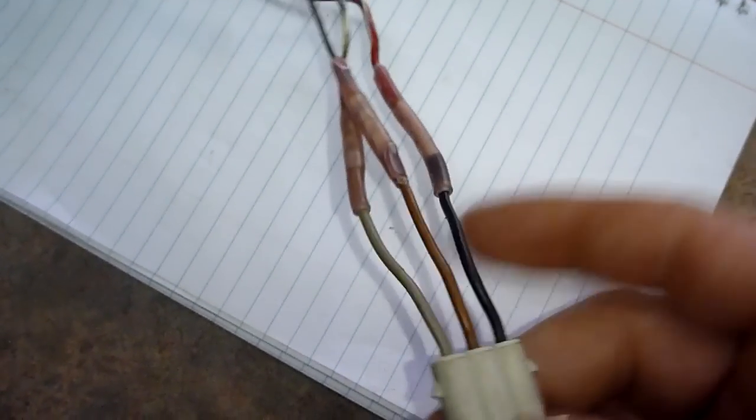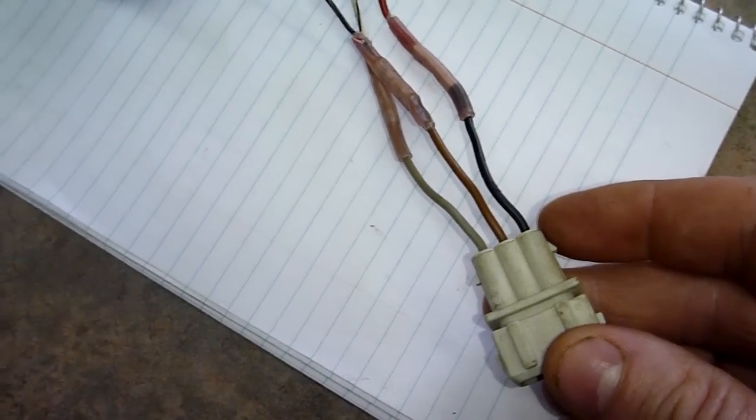If you order this, you won't get the wires, so you have to order the wires separately. But if you find this in a wrecking yard, like for a Golf or a Jetta, this is the EDCO system.